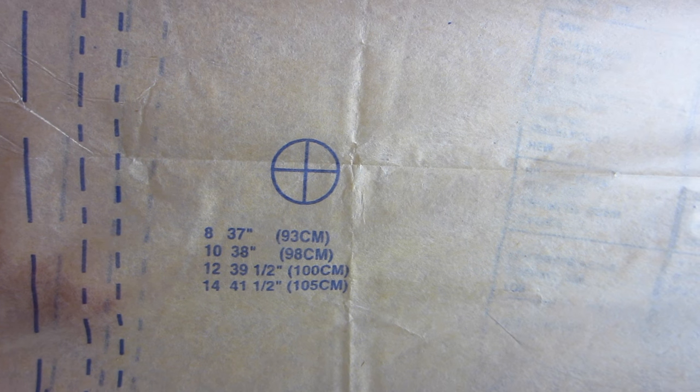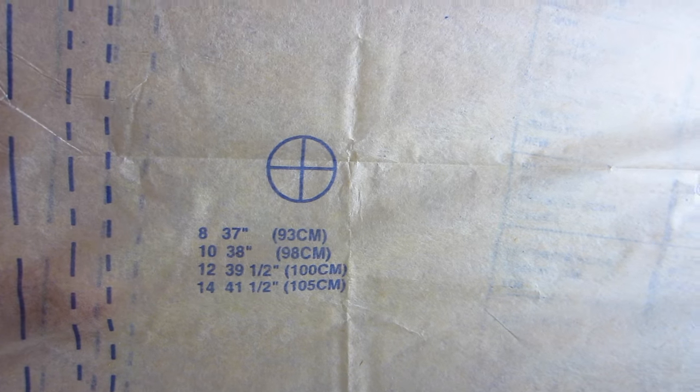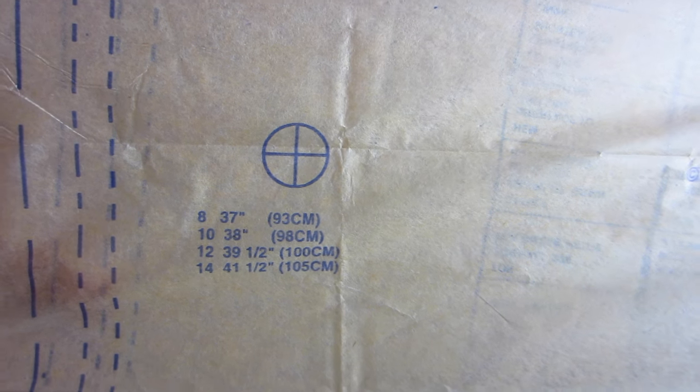And they'll also have them like down here. You'll see there's another one, and that's for your hip measurement. So traditionally you'll find them for the bust, for the hip, and for the waist, and I've sometimes seen them for the bicep as well.